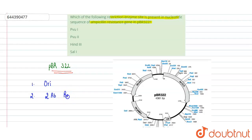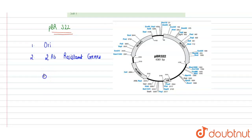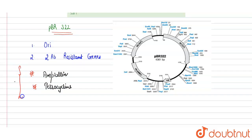pBR322 contains two antibiotic resistance genes which act as selectable markers for finding the recombinant from the non-recombinant. These antibiotic resistance genes confer resistance towards ampicillin and tetracycline. These two genes contain different restriction sites so they can be cut and ligated accordingly.